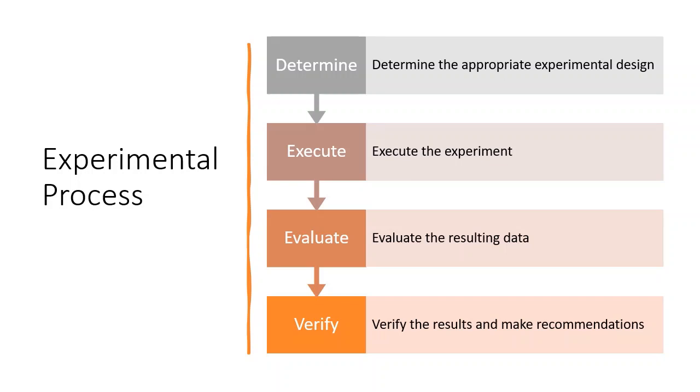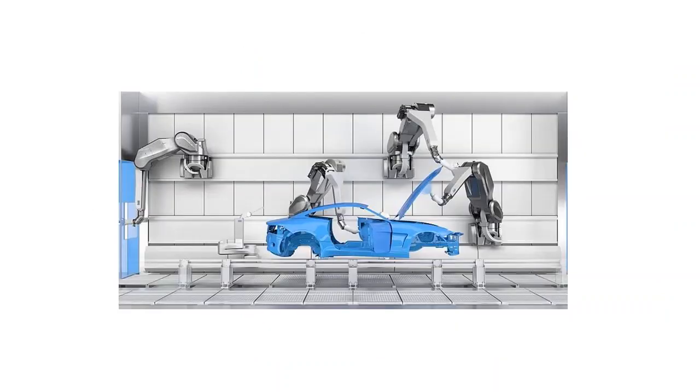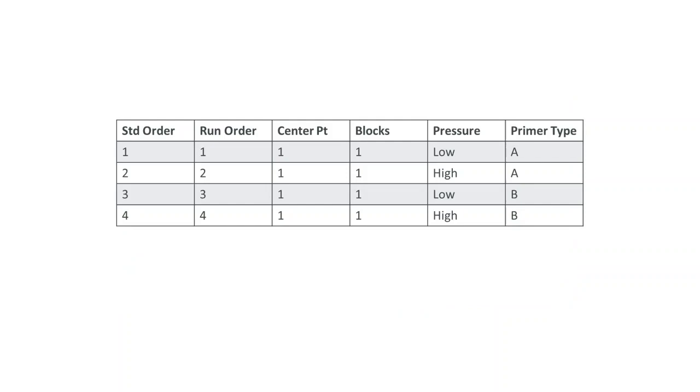Then we verify the results, then make recommendations about the process. A successful experimental design incorporates both process knowledge and statistical procedures. Process knowledge is invaluable in the design stage as well as in the evaluation of results.